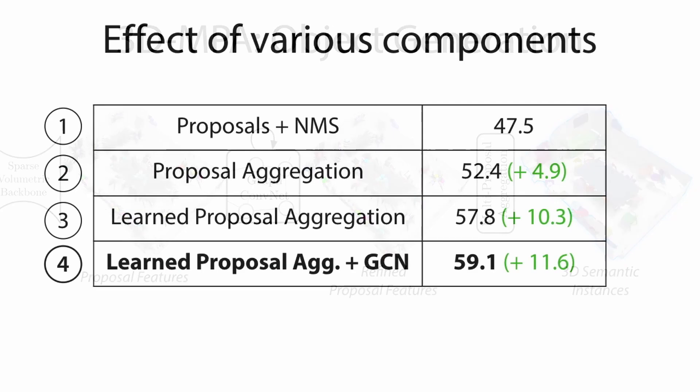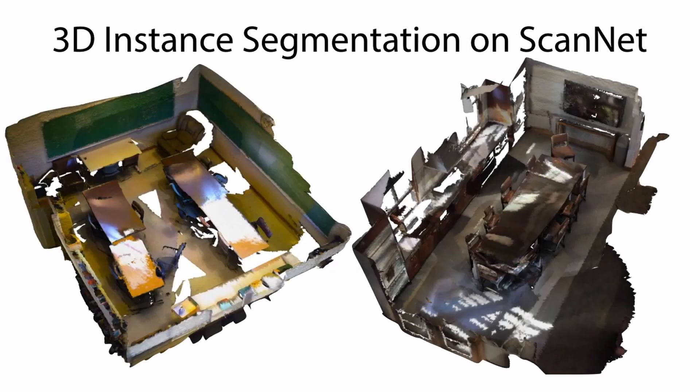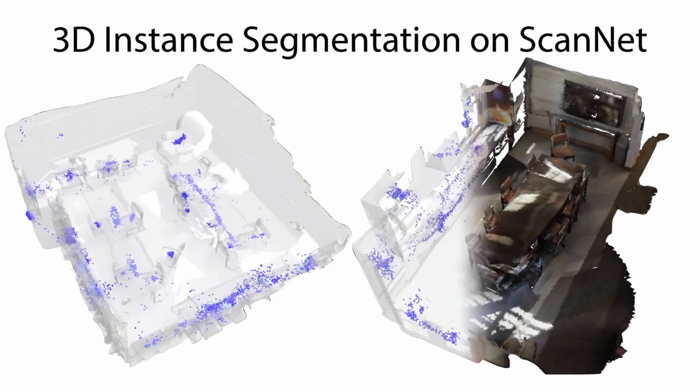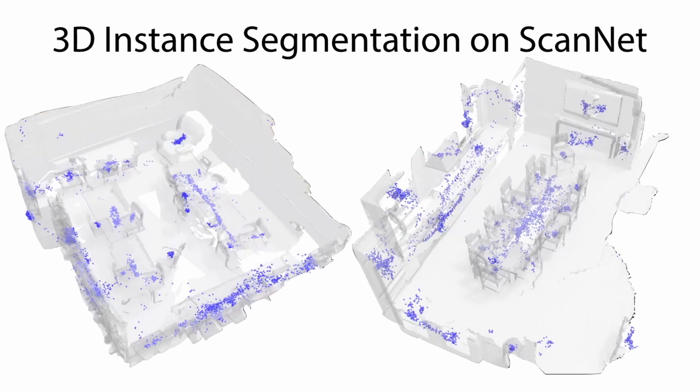Instead, we propose to aggregate multiple proposals based on jointly learned features. We experimentally demonstrate that aggregating proposals improves over non-max suppression. Here, we show additional instance segmentation results.